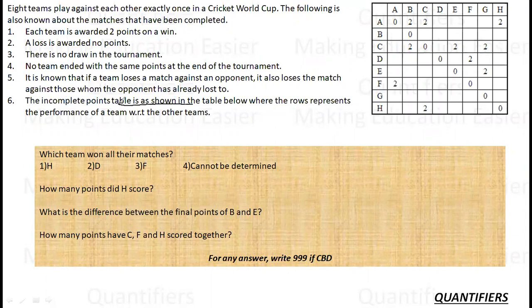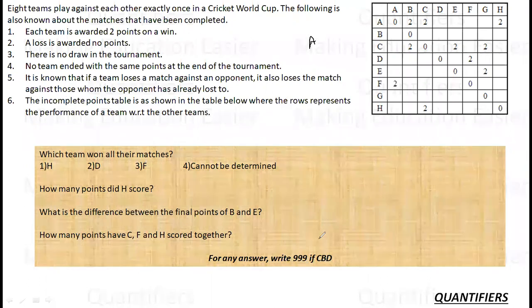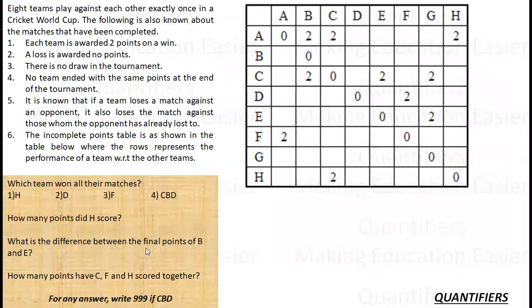The incomplete table shows the rows represent the performance of team with respect to other. For example, A row B column represents that A has beaten B. So, this is the basic structure we are going to follow. So, let me just write what I have. A has beaten B, C and H. So, A has beaten B, C and H.